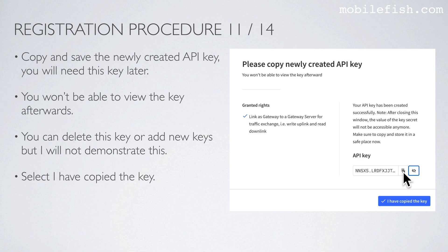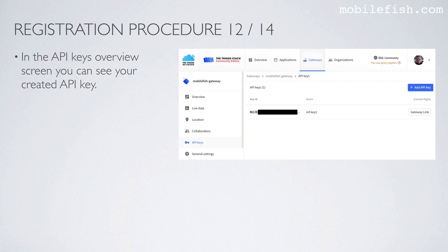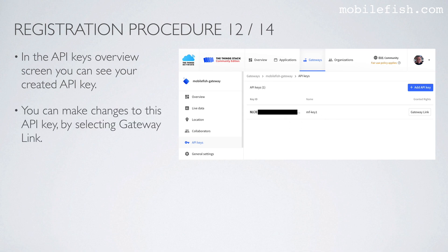In the API Keys overview screen, you can see your created API key. You can make changes to this API key by selecting the Gateway Link option, but I will not demonstrate this.